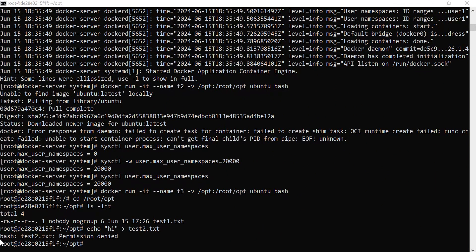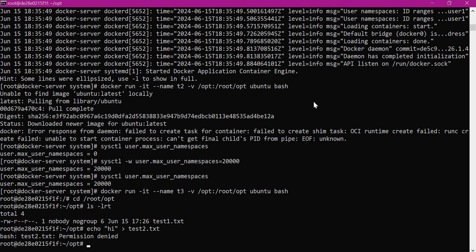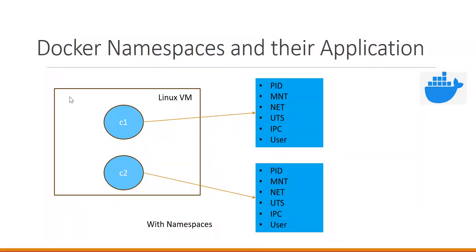Similar to all the namespaces discussed so far, we also have another namespace called the IPC namespace, which isolates inter-process communication objects in each container — for example, shared memory segments, message queues, and so on. In this video, we have seen what a Docker namespace is, the different types of namespaces, and how they are used to isolate containers. I hope this video helps. Thanks a lot for watching.